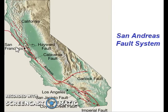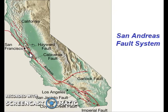Indeed, the Hayward Fault goes right through Richmond, Berkeley, Oakland, and Hayward. And when it goes through the Berkeley campus, it actually runs pretty much right under their stadium. It also offsets a small creek on campus. So if you ever happen to be on the Berkeley campus along Strawberry Creek, you can see an offset stream firsthand.